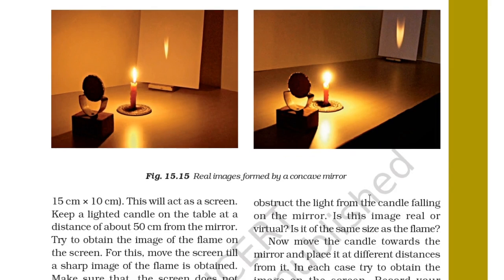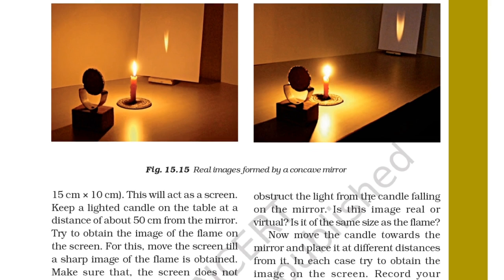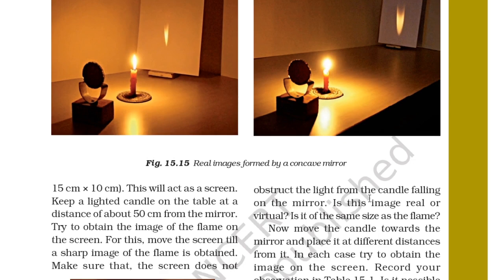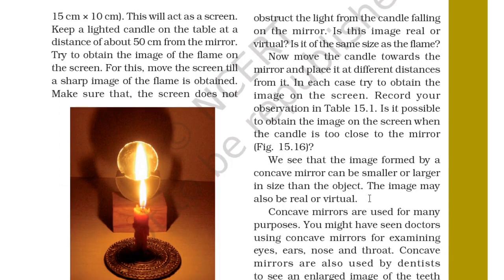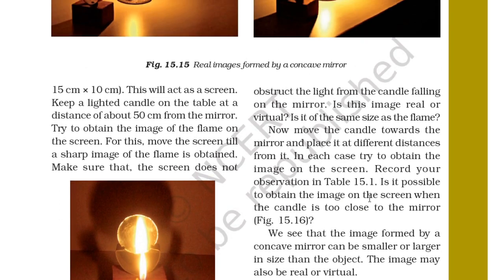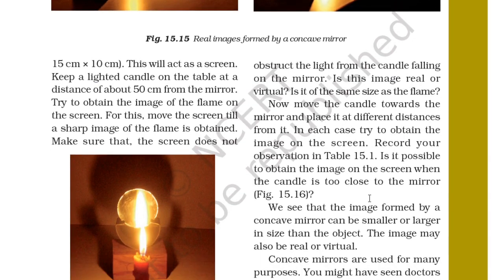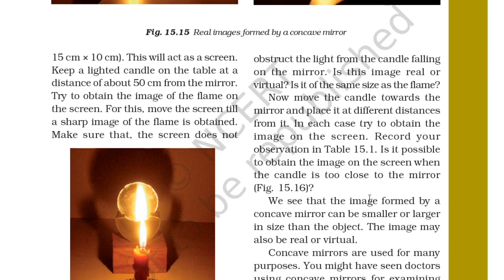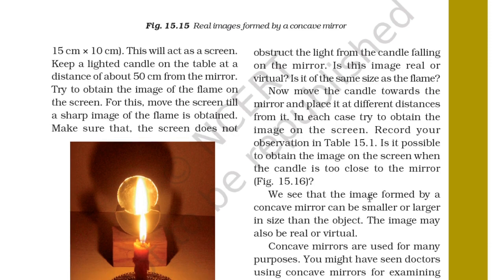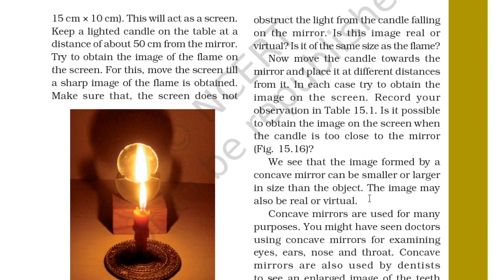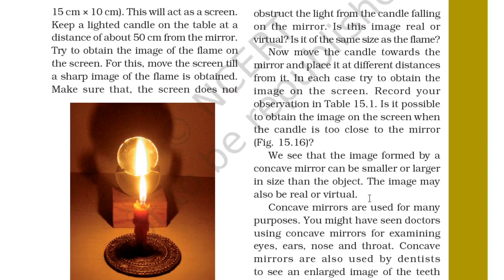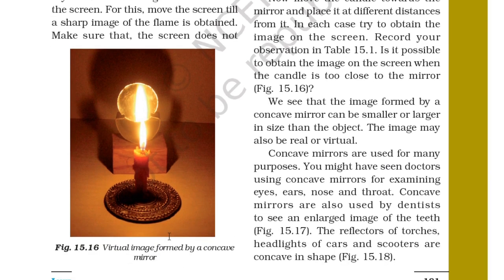Keep a lighted candle on the table at a distance of about 15 cm from the mirror. Try to obtain the image of the flame on the screen by moving the screen until a sharp image is obtained. Make sure the screen does not obstruct the light from the candle falling on the mirror. Is this image real or virtual? Is it the same size as the flame? Now move the candle toward the mirror and try to obtain the image at different distances. We can see that the image formed by a concave mirror can be smaller or larger in size, and may be real or virtual.